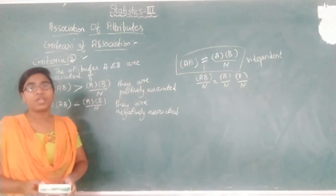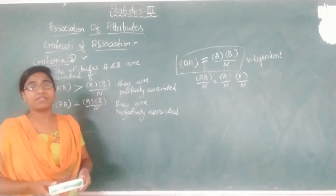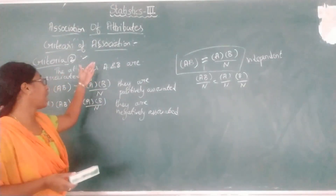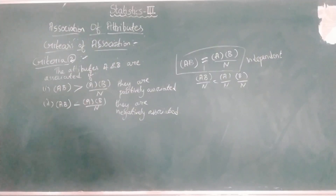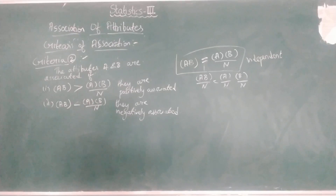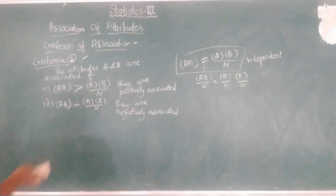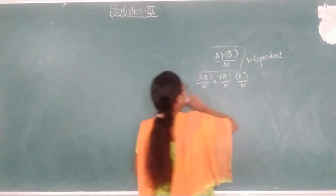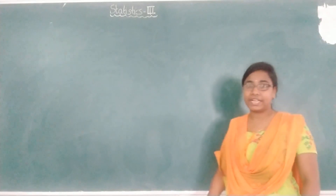So these are the two criteria for association of attributes. Association means if they are not independent, they are said to be associated. We have seen complete association and complete disassociation, and the two criteria based on the criteria of independence. Now we will see a few problems related to independence and association.